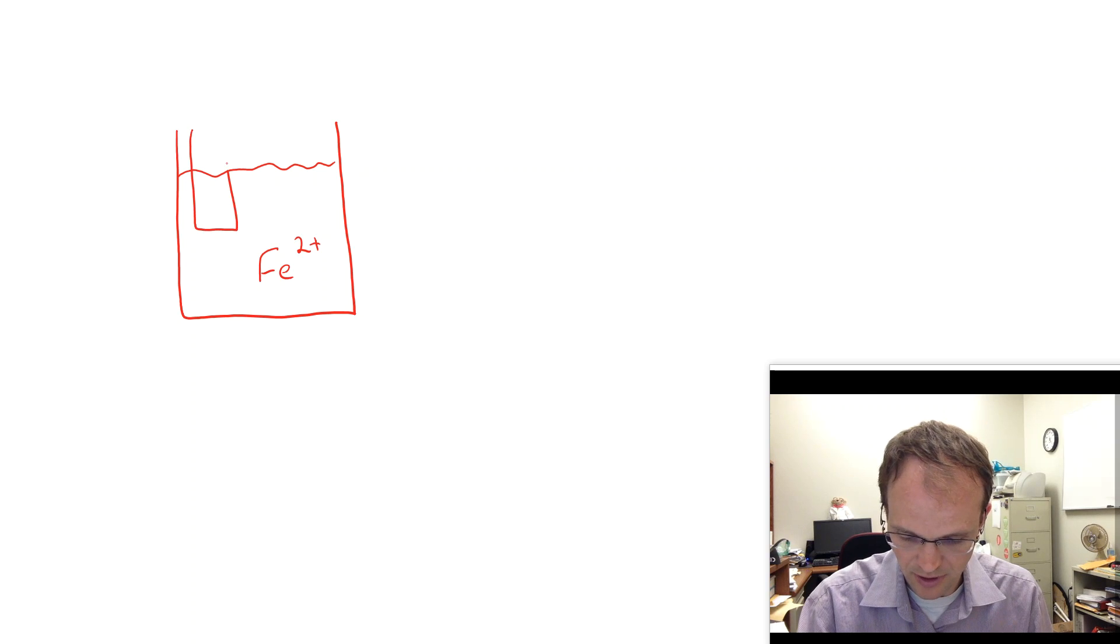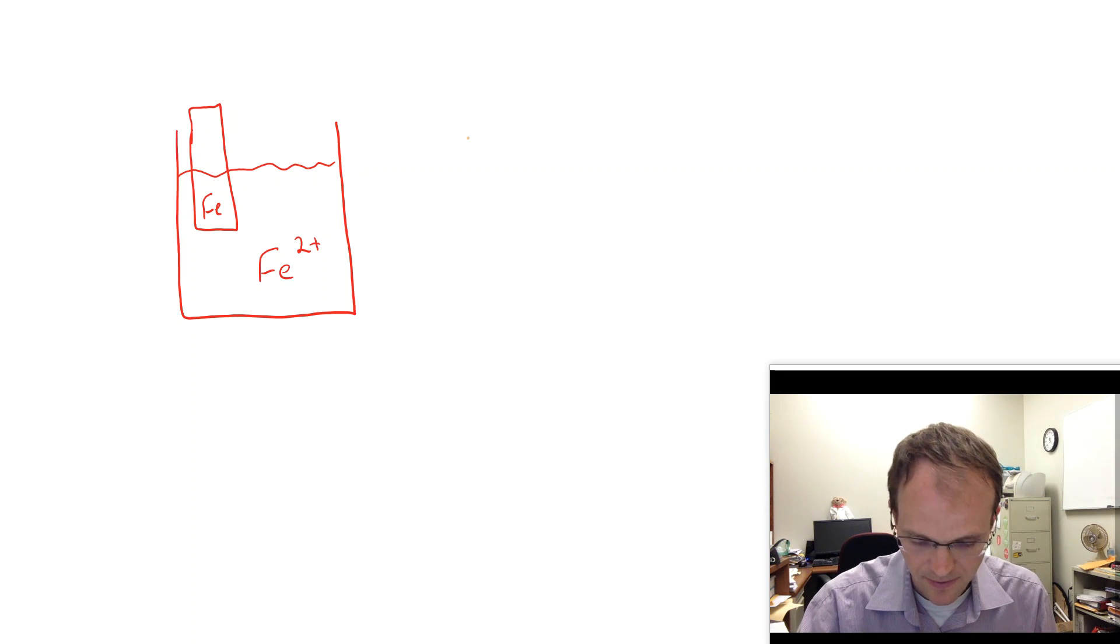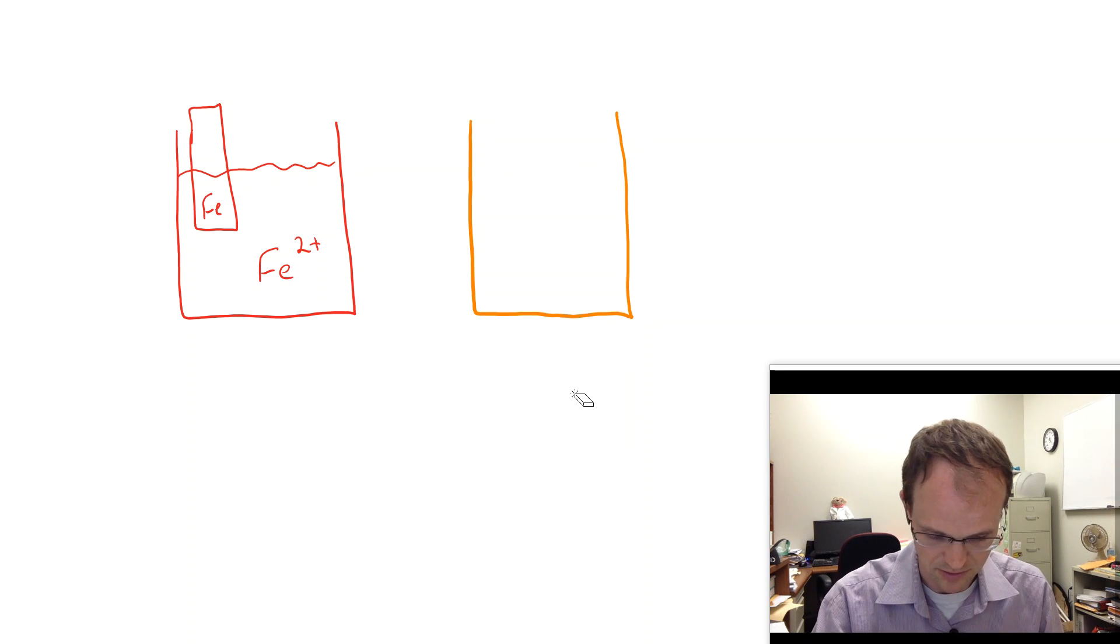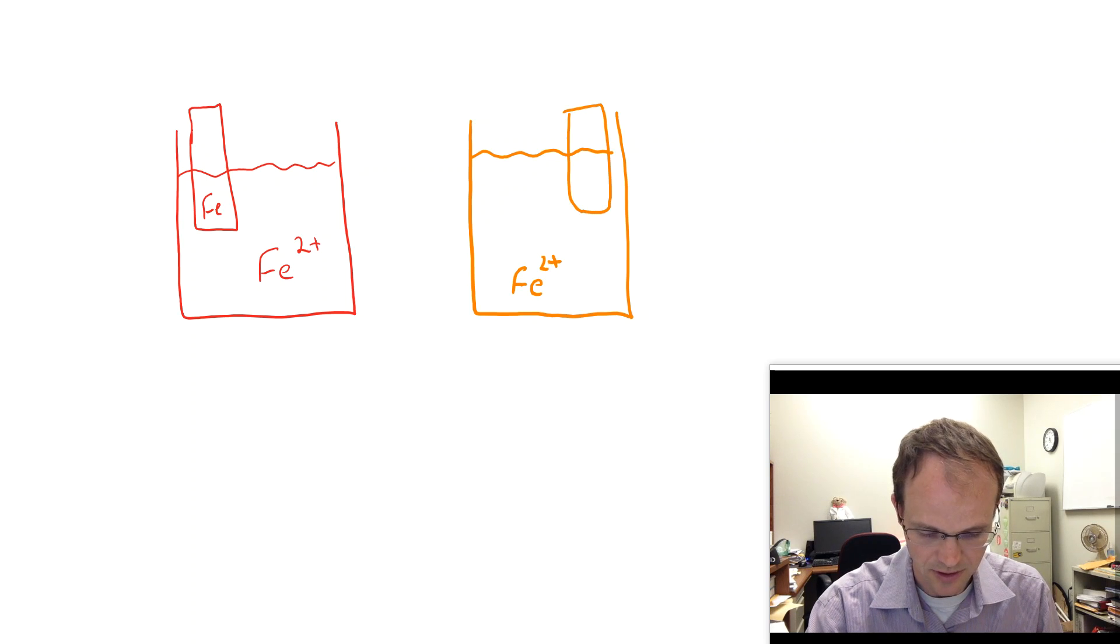Now, in addition, we're going to put an iron electrode in here, so that's a solid iron electrode that we have on the left. And then on the right, in a different color here, we are going to do a very similar thing. We're going to take a beaker, put some solution in it, and some iron 2+.